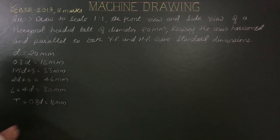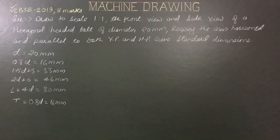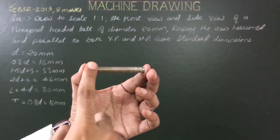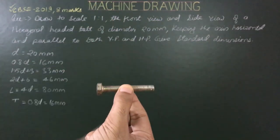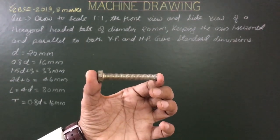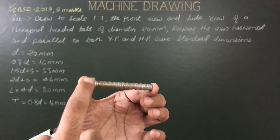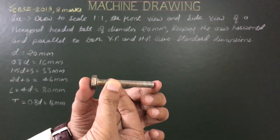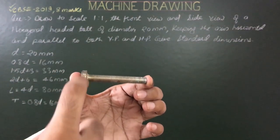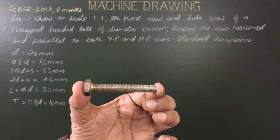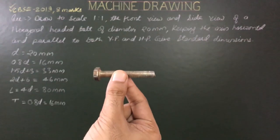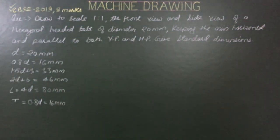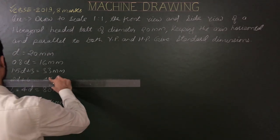After calculating all standard dimensions, let's check the position of the bolt. The axis is horizontal and parallel to both VP and HP. In the front view, we have two options: two faces visible or three faces visible. Three faces visible is better, so we'll assume the bolt with three faces visible from the front, axis parallel to both HP and VP, and bolt head on the left side.